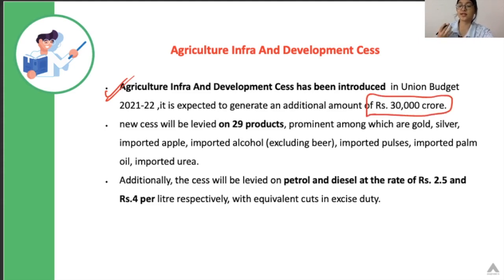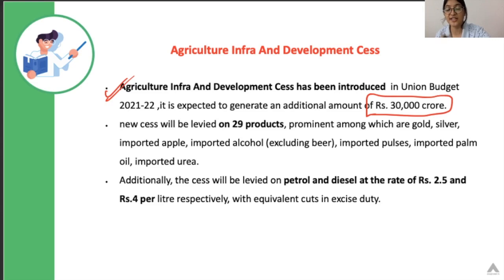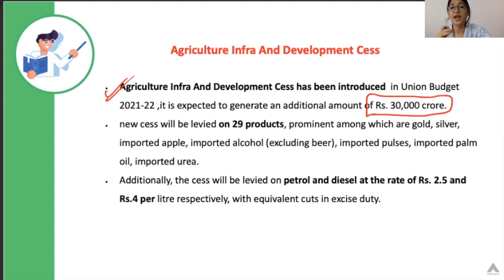The Cess's purpose is to create a dedicated pool of funds. Just like a clean energy Cess generates funds utilized for providing clean energy, the Agriculture Infrastructure Development Cess funds would be utilized for creating infrastructure related to agriculture only. This fund cannot be utilized anywhere else. The second benefit of the Cess is that it is not in a divisible pool, meaning the central government need not divide it between the states — the center can utilize this entire fund for the said objective.